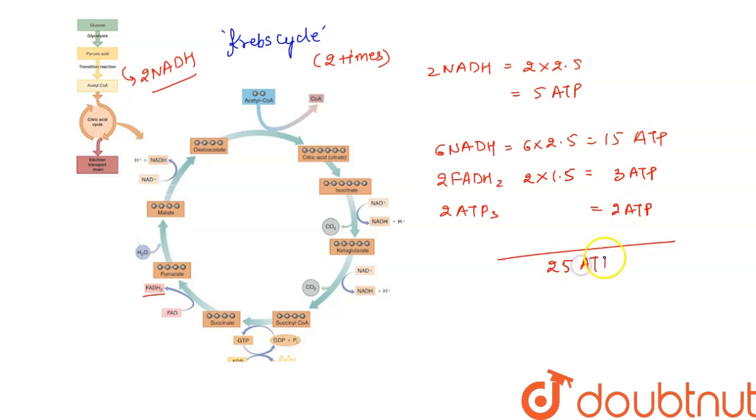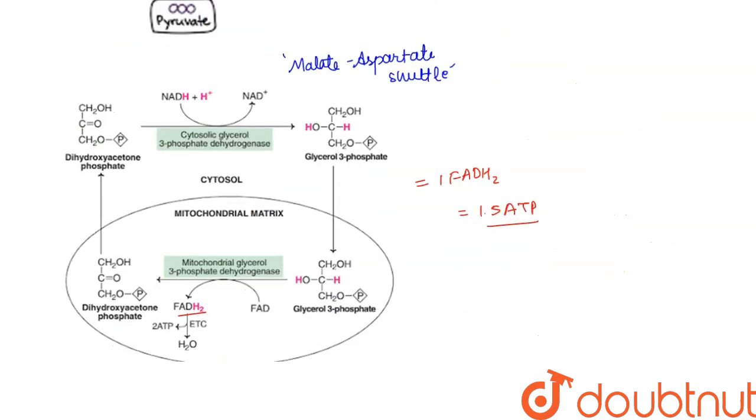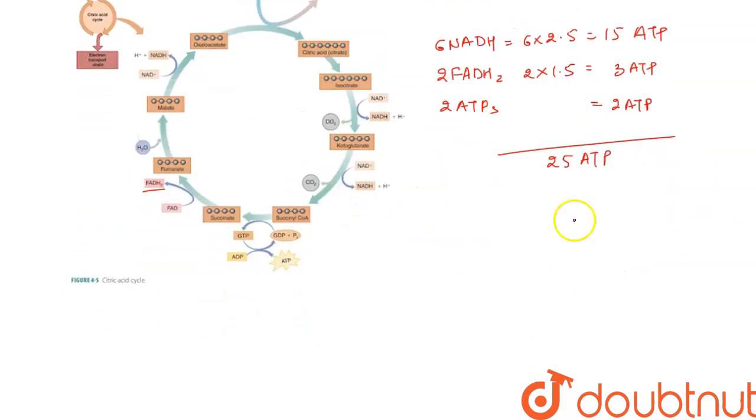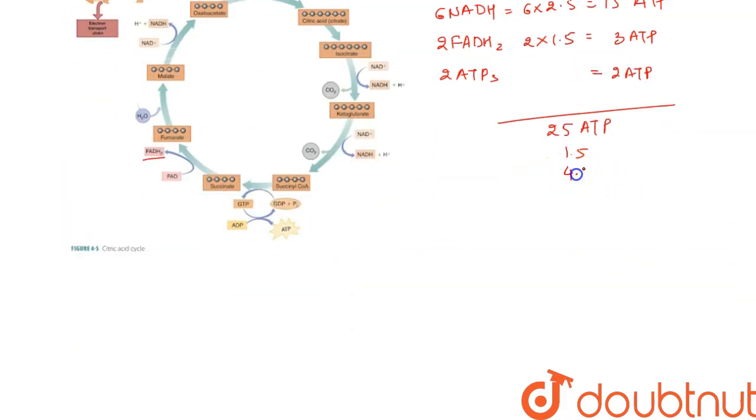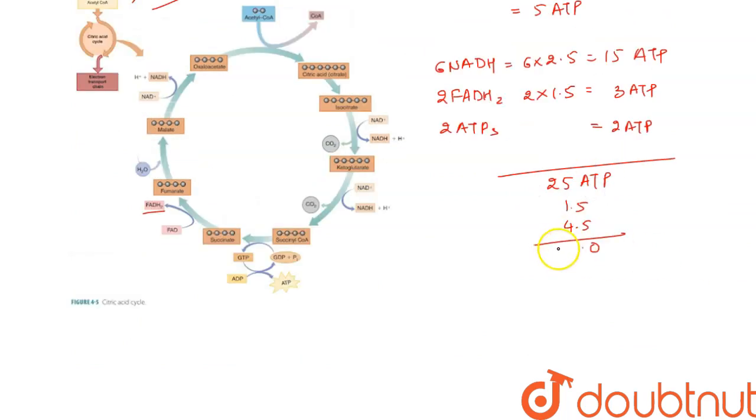25 ATPs plus 1.5 ATPs plus 4.5 ATPs. So this will make 31.0 ATPs.